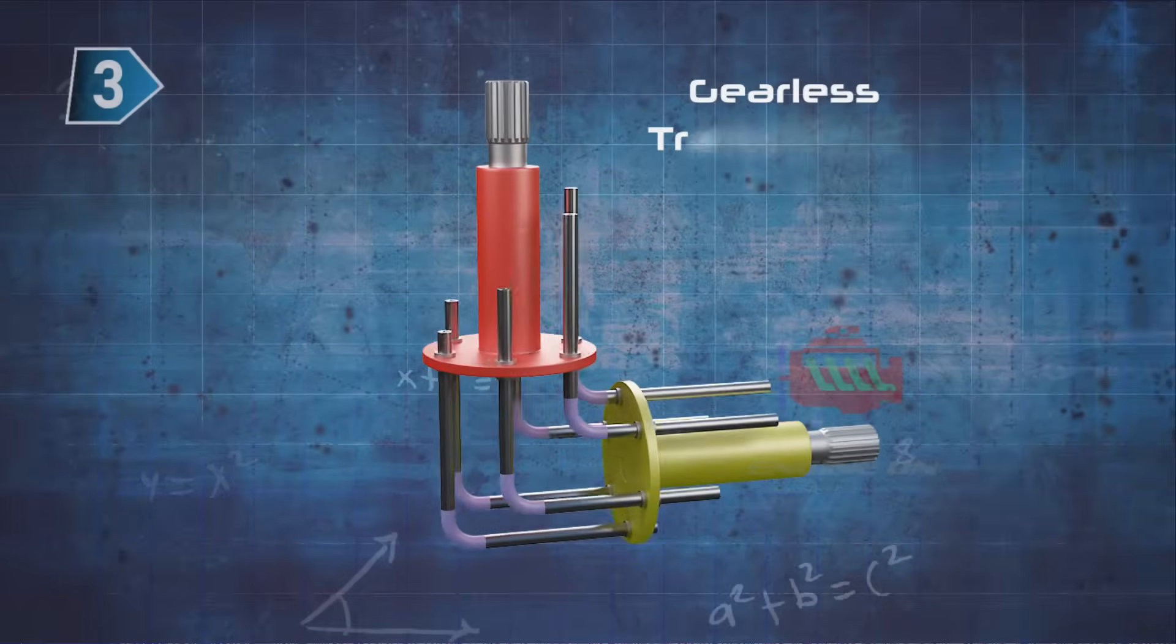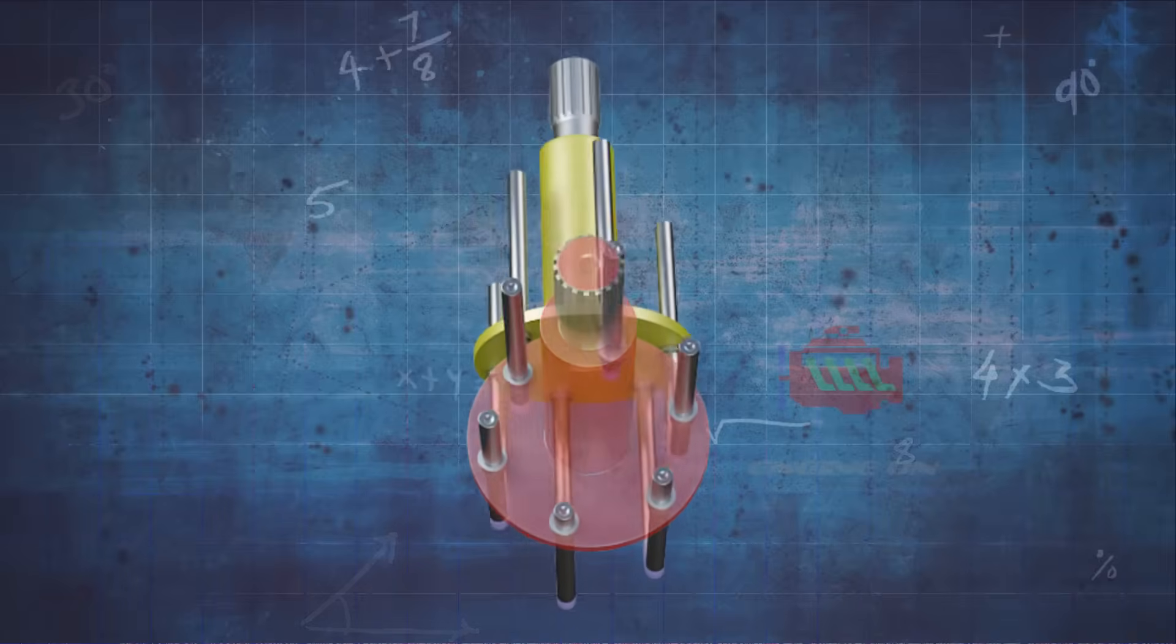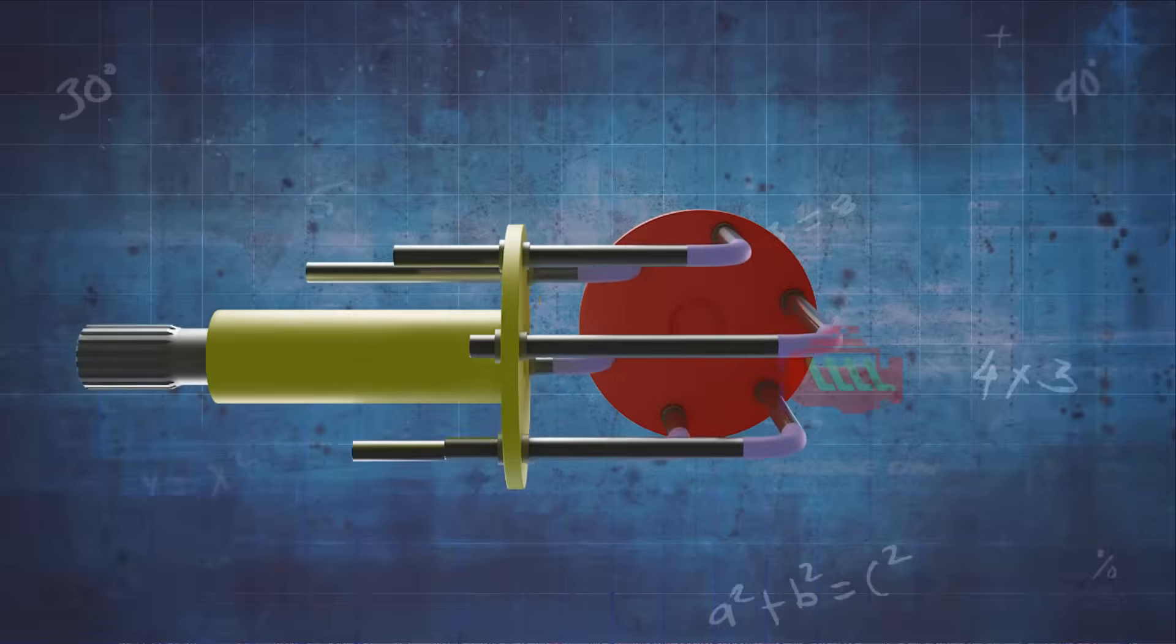A gearless transmission is a device that transmits rotational motion between two shafts without using gears. It uses sliding links that form a revolute pair with the hub. The links are bent at an angle and slide inside the holes in the hub. As the holes in the input hub rotate, it pushes the links and rotates the output hub.